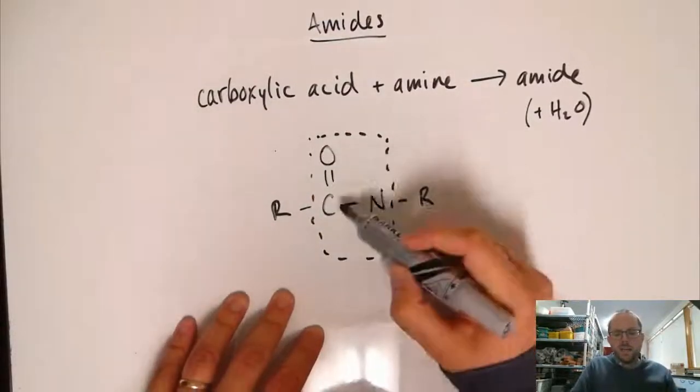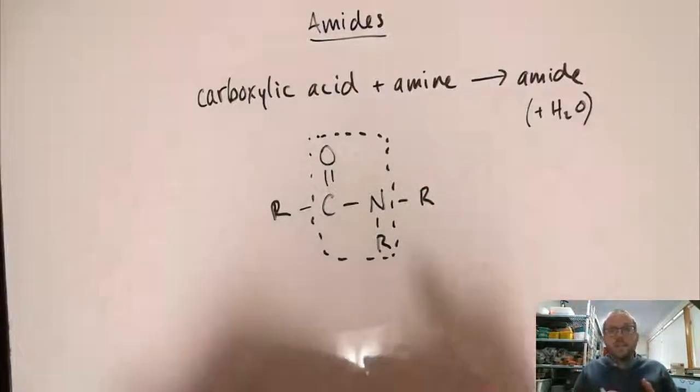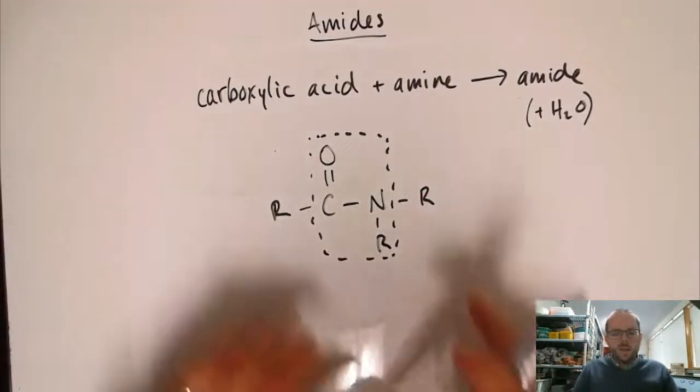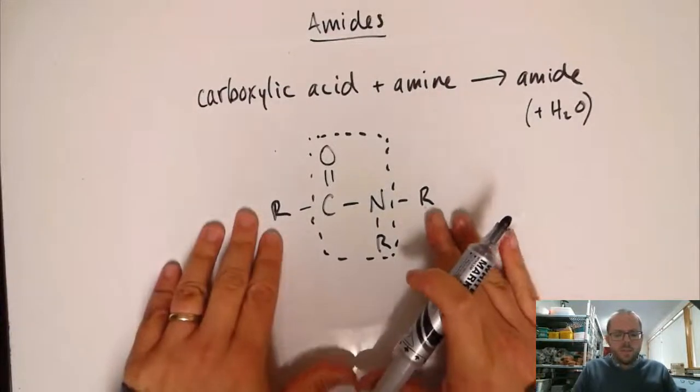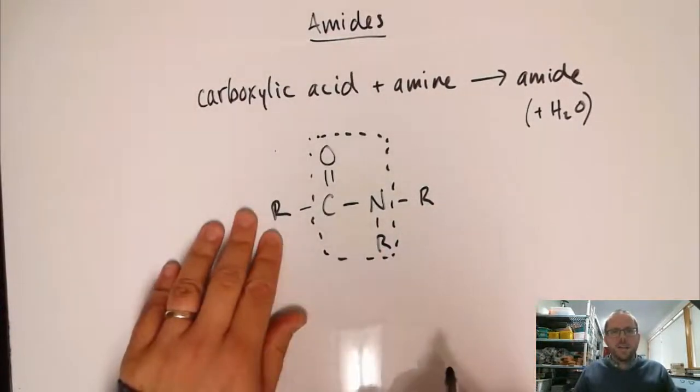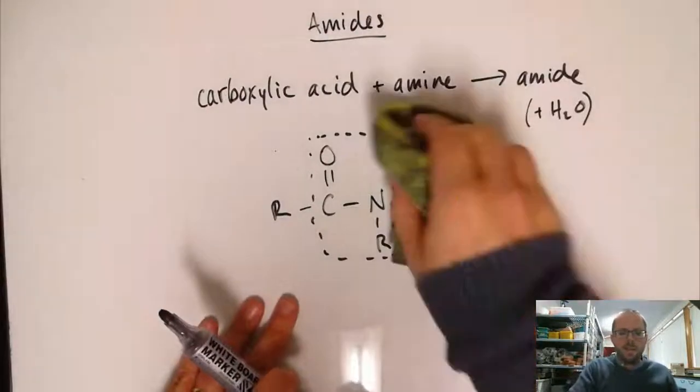A nitrogen directly connected to a carbonyl group is evidence that there is an amide and that this compound is an amide. We have carbon groups of whatever size that can be attached at all of these places where I've indicated an R.